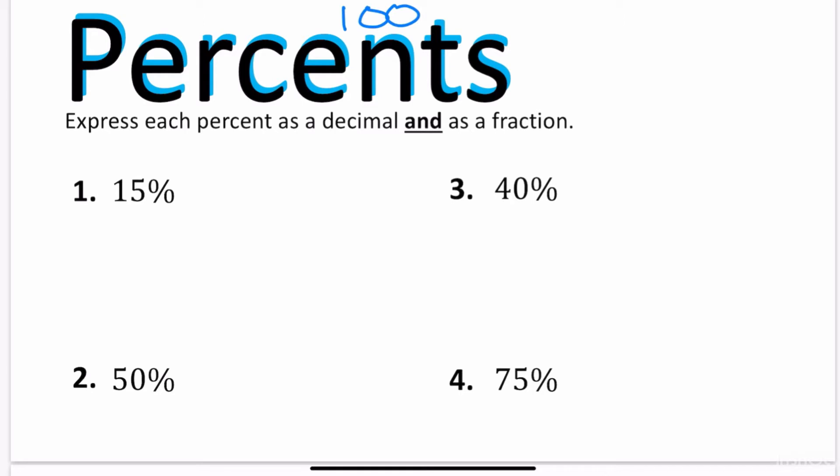So let's look at the directions. Express each percent as a decimal and as a fraction. In order for us to go from a percent to a decimal, you're going to divide by 100, which basically puts us into a fraction. So 15 over 100 as a fraction can be reduced if I divide by 5 and I end up with 3 over 20. So this is the answer as a fraction.